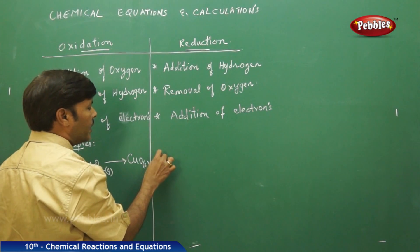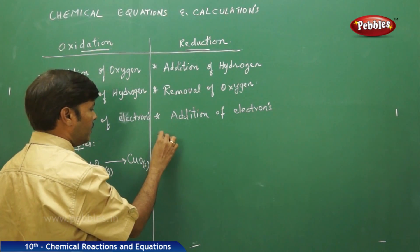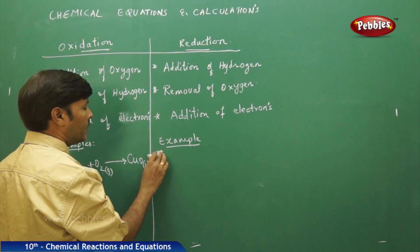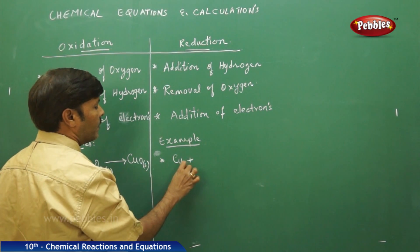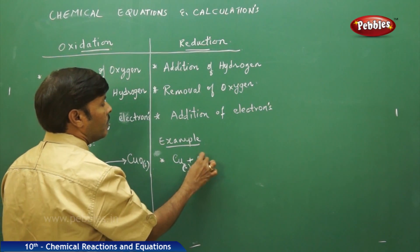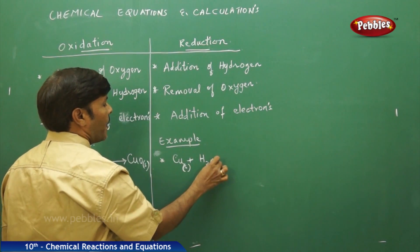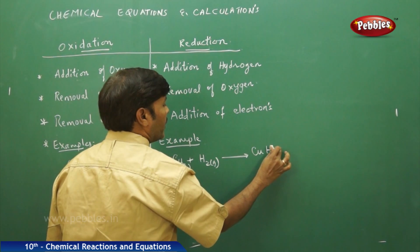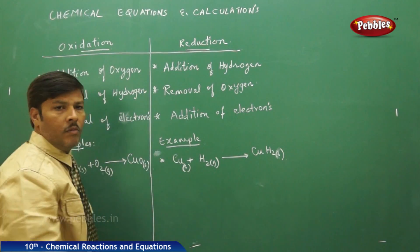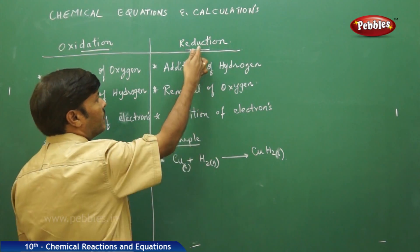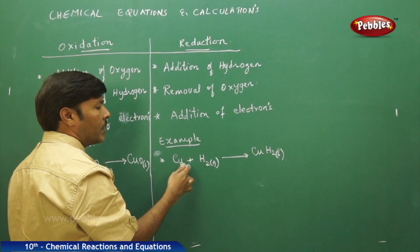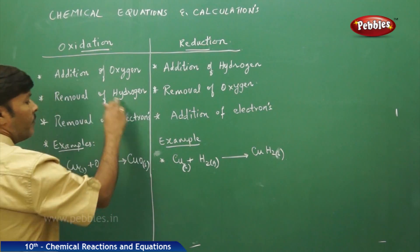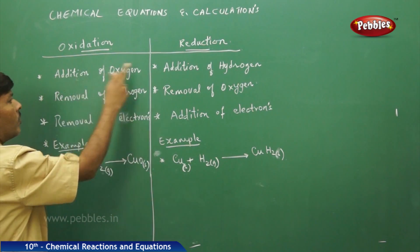Similarly, for reduction, take the same element copper as a solid. Because addition of hydrogen is reduction, copper plus hydrogen gives rise to cupric hydride, which is a solid metal hydride. Addition of hydrogen to a given element is reduction, so hydrogen reacts with metal to give metal hydride, that is cupric hydride. This is one way of understanding the examples for the first statement in both oxidation and reduction.